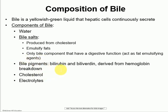Bile pigments, which are bilirubin and biliverdin, are metabolites from hemoglobin breakdown. So the liver breaks down hemoglobin, and some of the products were bilirubin and biliverdin, and those give the characteristic color of bile and also the characteristic color of feces. Bile also has cholesterol and electrolytes in it.